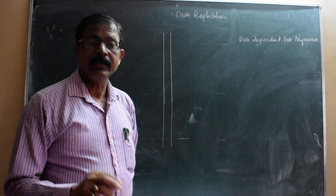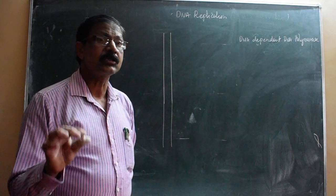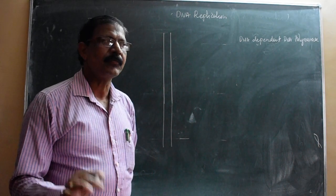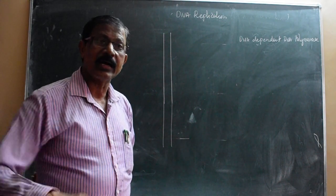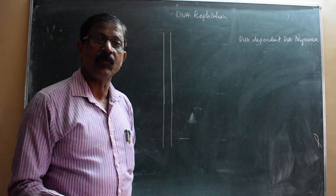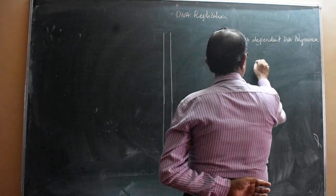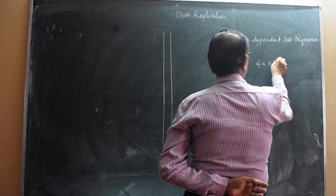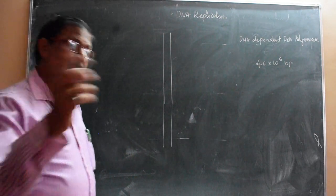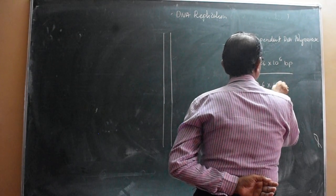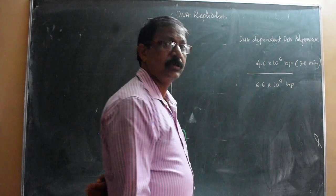In bacteria or E. coli, the process of DNA replication completes within 38 minutes. Scientifically, counting the number of bases and the time required - it requires 38 minutes. In E. coli, the total number of bases is 4.6 × 10⁶ BP, compared to human beings which is 6.6 × 10⁹ BP. It requires 38 minutes to complete the polymerization in E. coli.